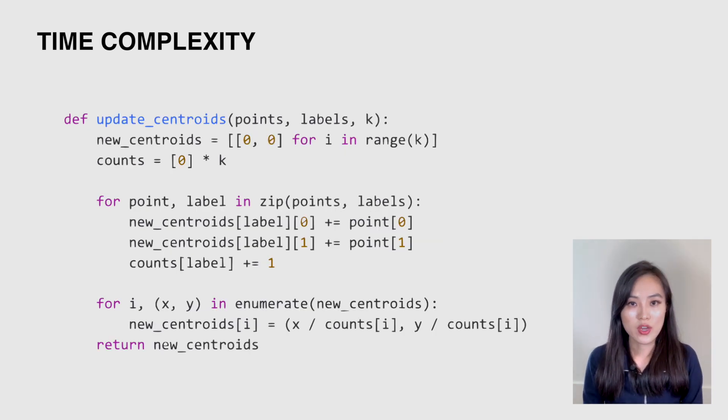Next, to update the centroids, we have one loop going through the data points and the other one going through the centroids. So the time complexity is O(k + n), which can be simplified to O(n).